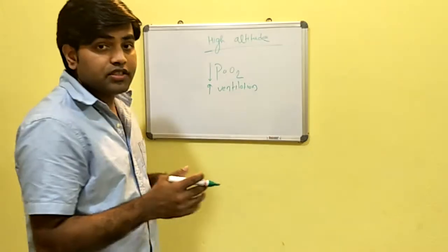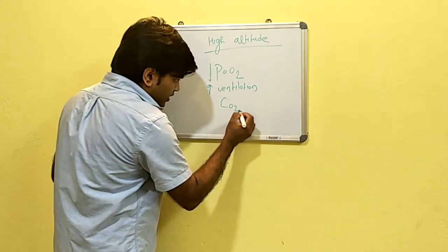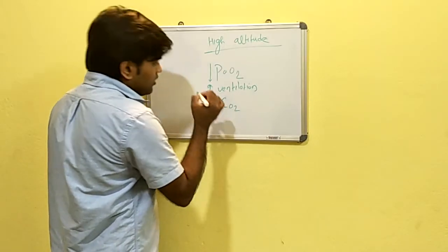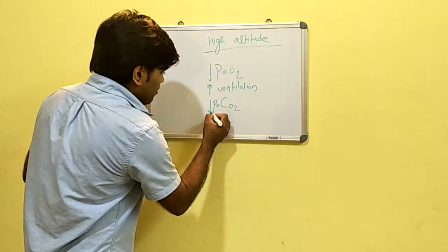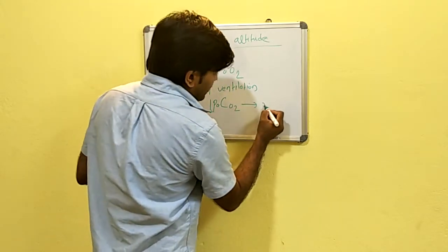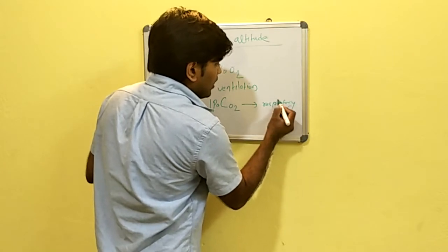Since there is increase in ventilation, there is excretion of carbon dioxide from the body, leading to decreasing partial arterial carbon dioxide level, which leads to alkalosis known as respiratory alkalosis.